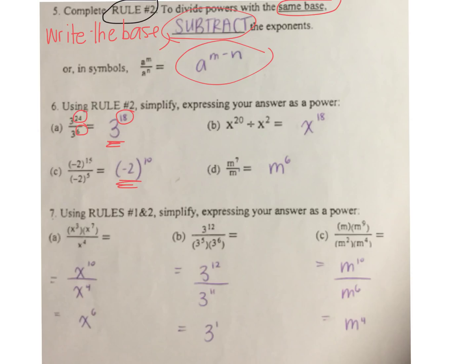If there's a negative, you must include brackets. Check your answers, and I'm going to go through number 7.